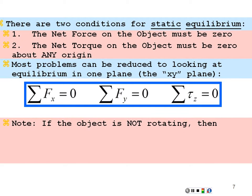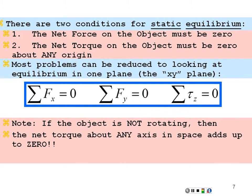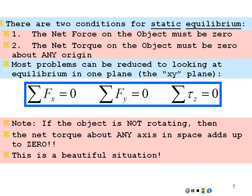If the object is not rotating, the net torque about any axis in space will add up to zero. This is truly powerful because I can choose the axis for calculating torques to eliminate certain forces from the equation. If I choose an axis through which the lines of action of certain forces pass, those forces will have no moment arms — zero distance to their line of action — and hence no torque about that origin. That will simplify the problem immensely. So I'm going to choose the axis that has the most lines of action of forces passing through it.